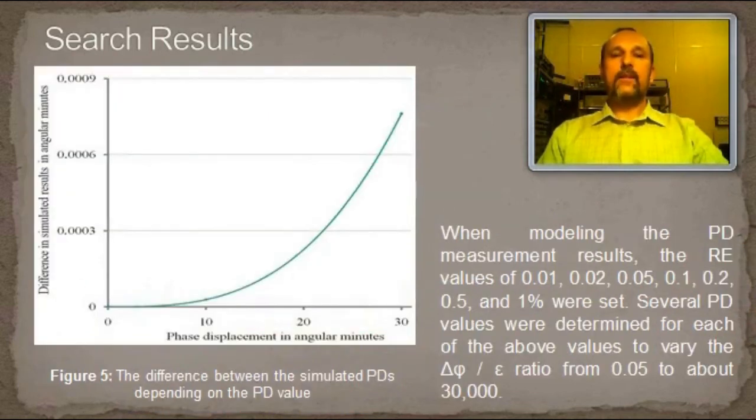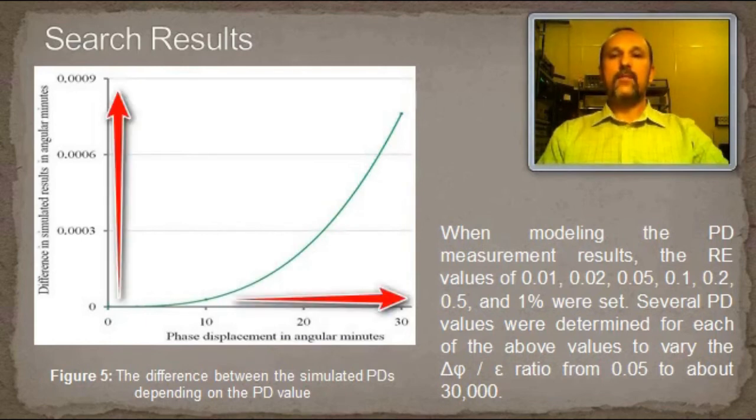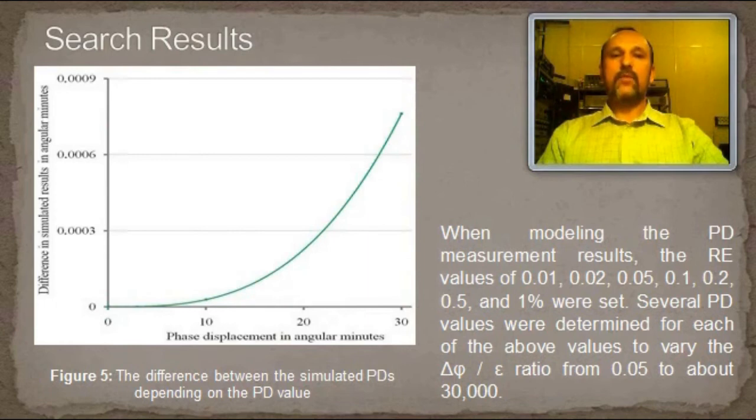We find that difference in results is negligibly small and does not depend on the ratio between the phase displacement and ratio error. It should be noted that the relative difference in the results increases with the increase of the phase displacement, but does not reach up to 1% as well as does not reach half of the second significant digit, even at the phase displacement of 300 angular minutes.